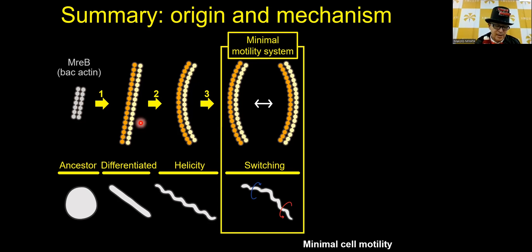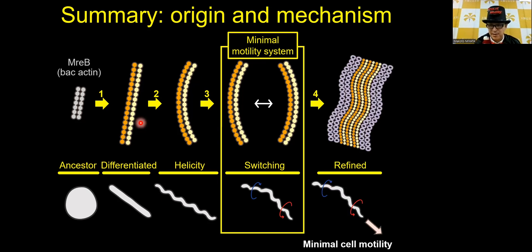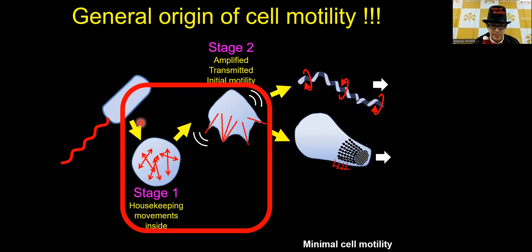In our experiment we reconstituted the minimal motility system — to our knowledge, no other such small system can move a cell. We constructed it in a minimal cell, so we can say it is a minimal motility system in a minimal cell. For efficiency and robustness, the MreB protein differentiated into as many as five types, and the abundant fibril protein was developed, giving rise to Spiroplasma swimming. We reconstituted this evolutionary process in our lab, and this may represent the general origin of cell motility.